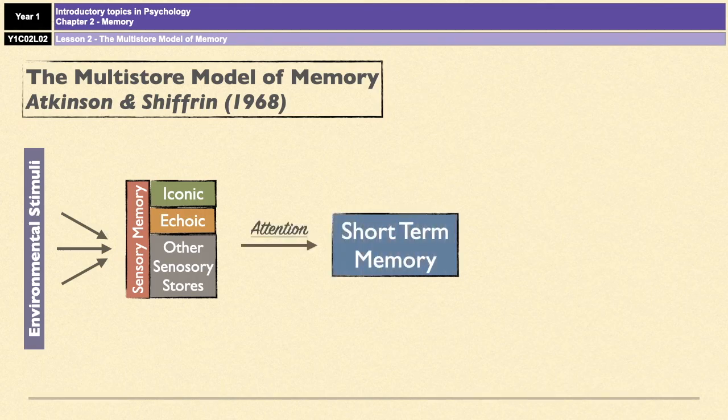The bits of information that we pay attention to — the bits we think are important — get transferred to short-term memory. Short-term memory has a duration of 18 to 30 seconds, a capacity of 7 plus or minus 2 items, and is coded acoustically.